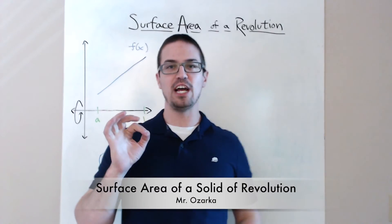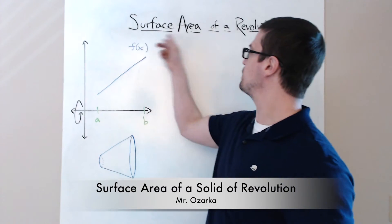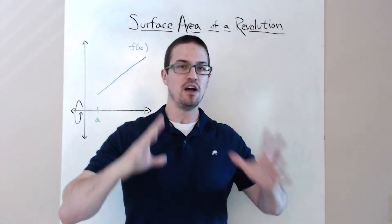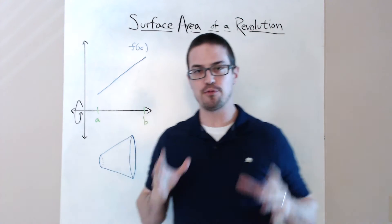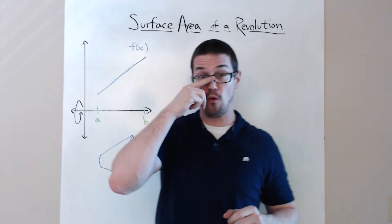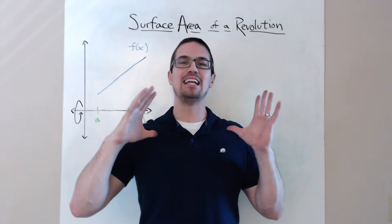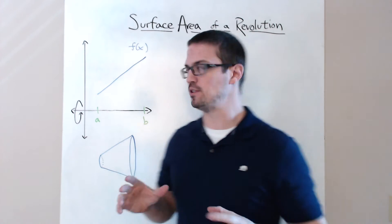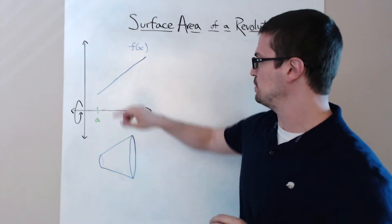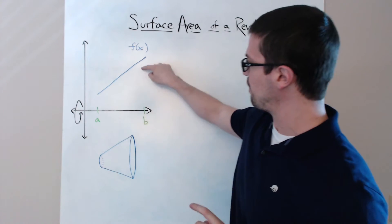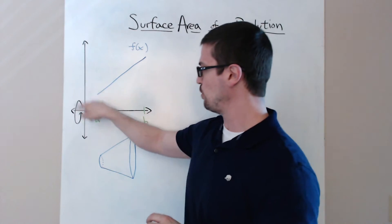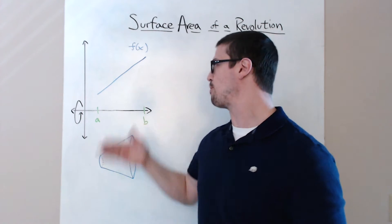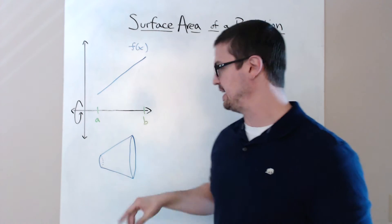This is going to be a video about the surface area of a solid of revolution. If you remember the previous video on disk method and washer method, it involved the volume of a solid of revolution. The solid of revolution is just whenever you have a function and you rotate it around some axis — it's whatever solid is formed from that rotation.